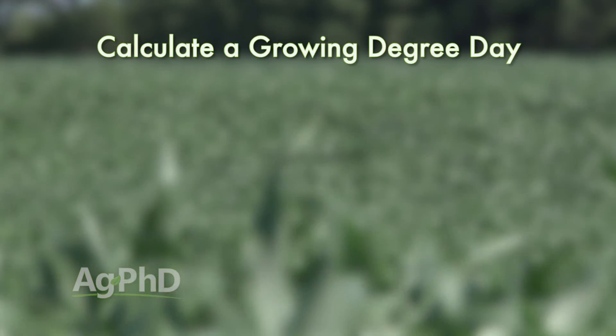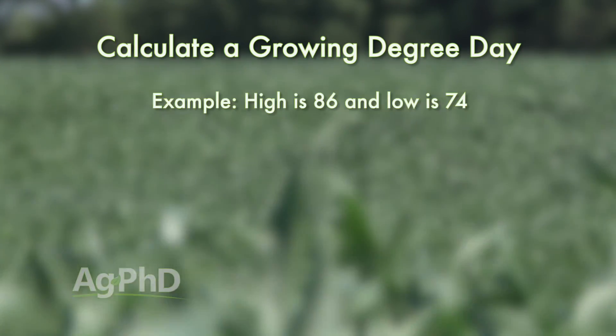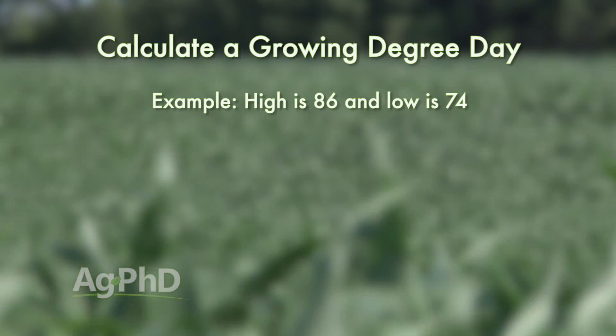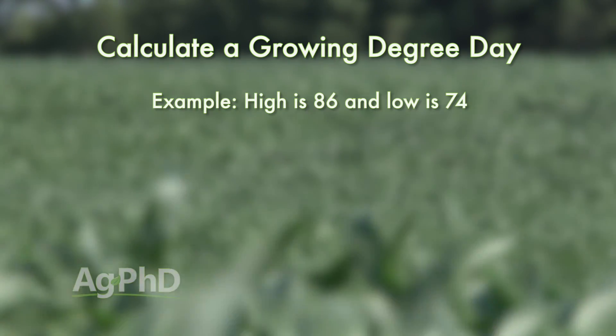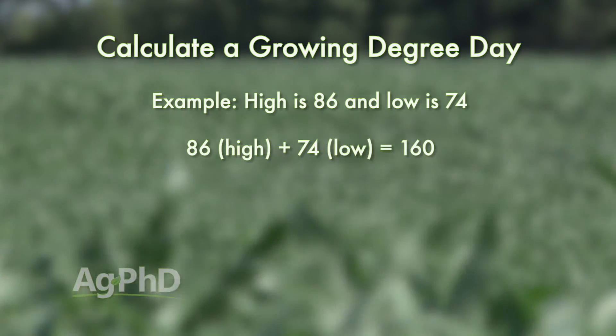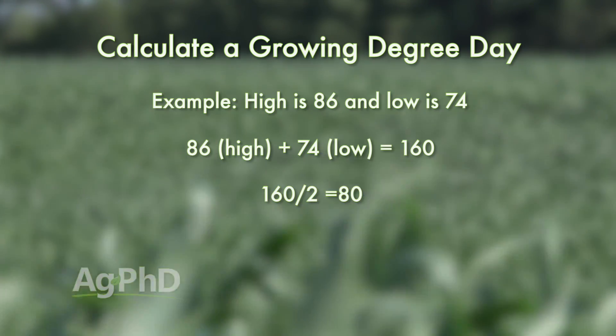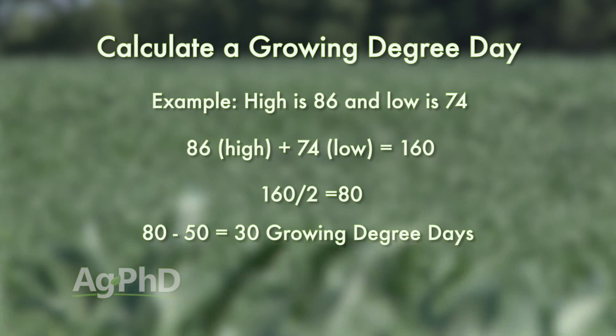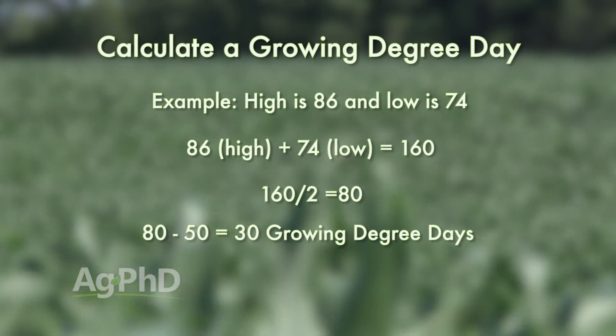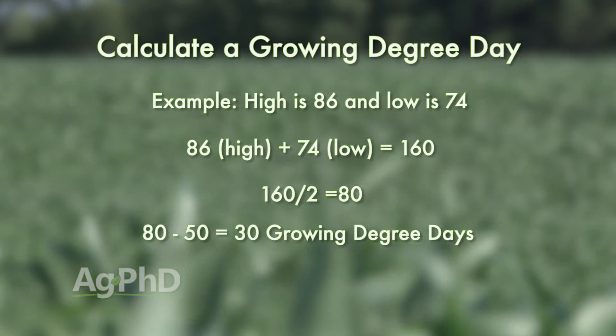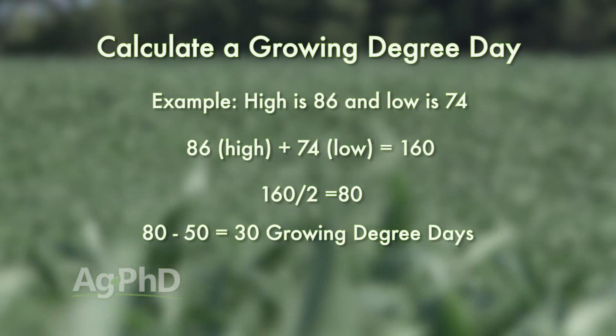When you get to the middle of summer, growing degree day accumulation becomes pretty rapid because the nighttime temperatures aren't falling so low in most cases. For example, if the high temperature for the day is 86 and the low temperature is 74, add those two together to get 160, divide by 2 to get 80, then subtract 50 — you've got 30 growing degree days, which is a much more rapid accumulation throughout that part of the season.